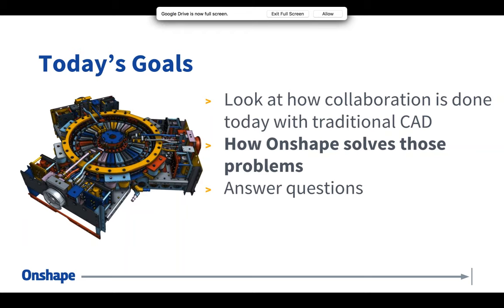We want to look at how traditional collaboration is done with traditional CAD systems — emailing files, viewers, and so on — and how Onshape solves these problems. The goal is to take a fresh look at how users work and ways to solve these issues with our unique architecture. Onshape solves the issues of collaboration because we're not working with files, per se.